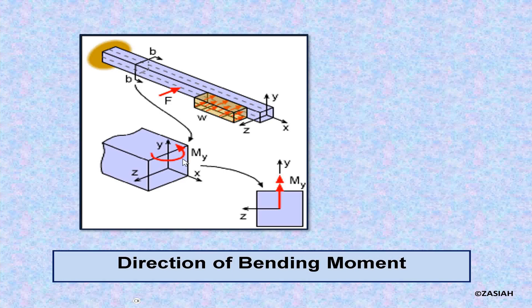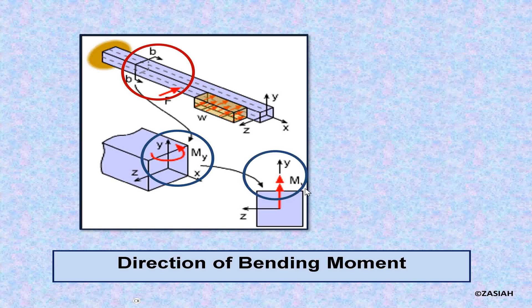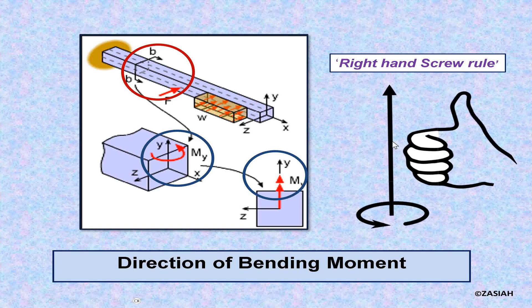Here is a practical example: the load is applied on the object and it creates a moment about the y-axis, that is My, as shown here. Using the right-hand screw rule, we can see that the upward direction will be the direction of the bending moment.